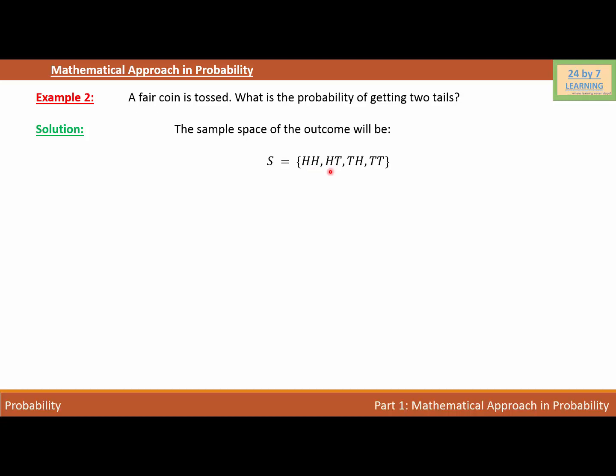Or we can have first possibility head and second possibility tail. Or first possibility tail and second possibility head. Or we can have both possibilities are tail and tail.